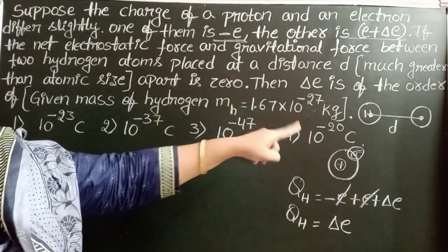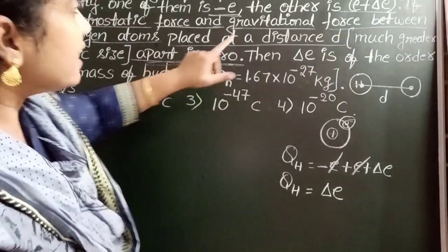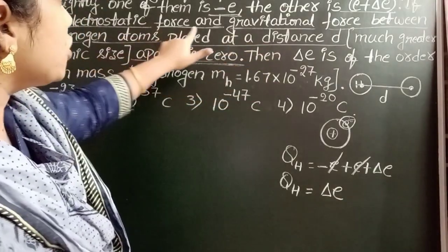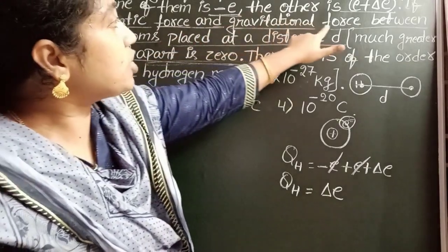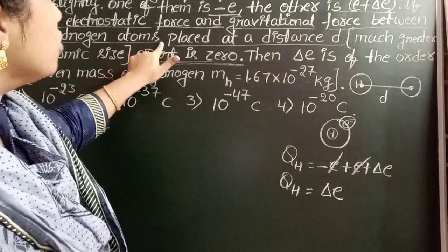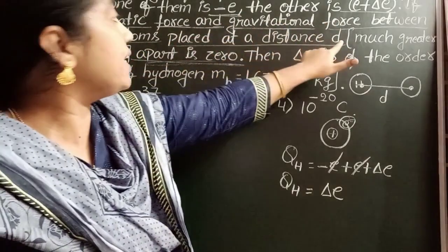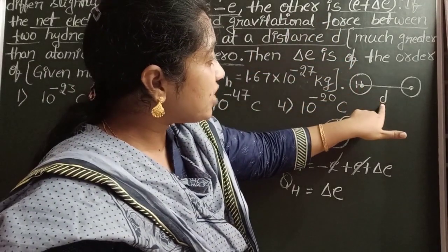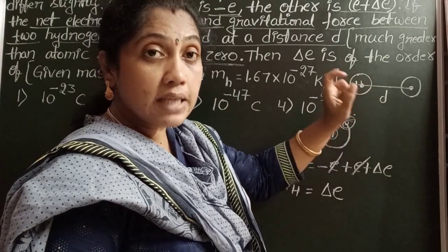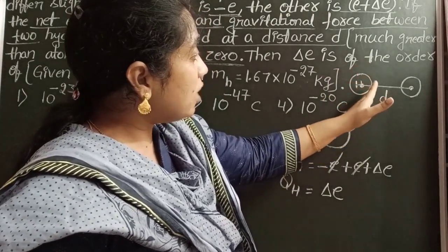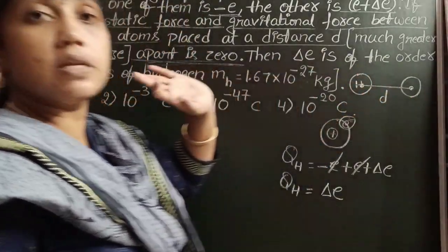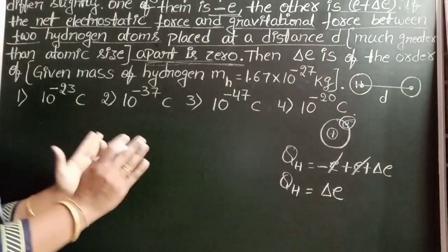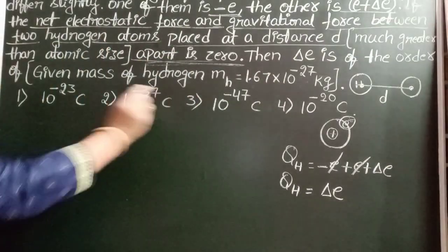The given condition is the net electrostatic force and gravitational force between two hydrogen atoms placed at distance d apart is zero. At this distance d, the resultant gravitational force and electrostatic force becomes zero. Their difference is zero. Take that condition.